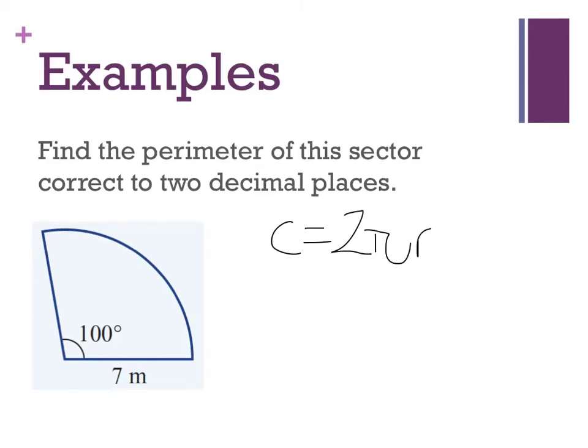I know that I calculate the whole circumference of a circle with that formula circumference equals 2πr. That's not going to work this time because I don't have a whole circle. I have part of a circle.